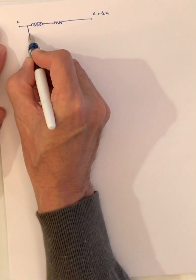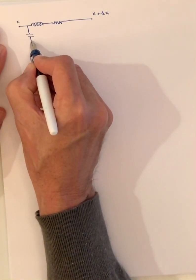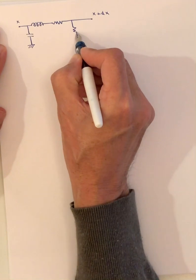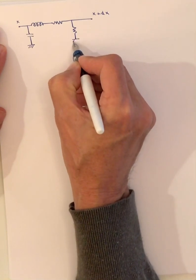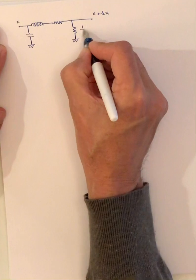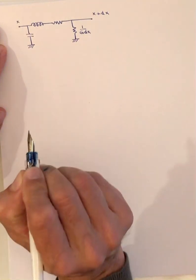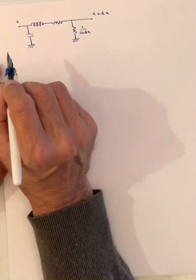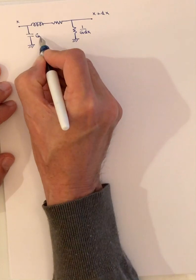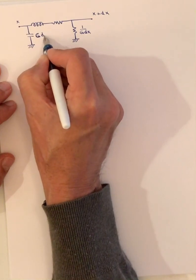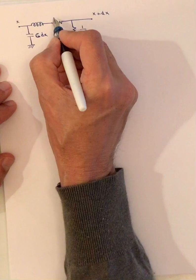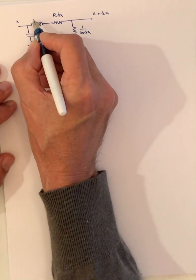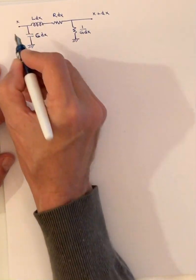In parallel to this, we have the capacitance inherent in the transmission line to a ground point, and we have a leakage conductance typical of the transmission line. We attach quantities to these parameters: 1 over G·DX for the leakage conductivity, C·DX for the capacitance, R·DX for the voltage drop, and L·DX for the inductance.